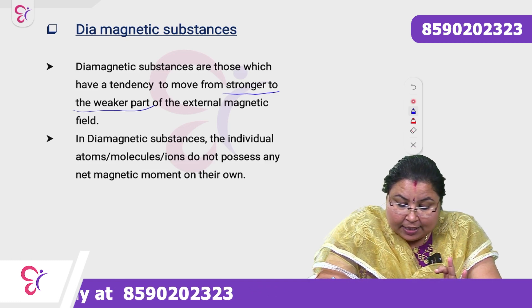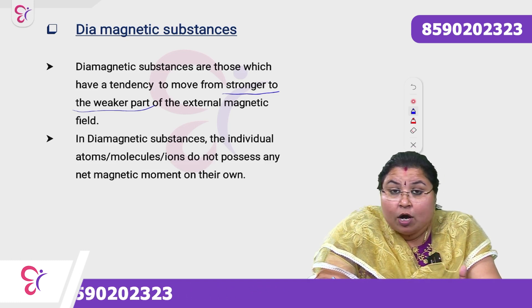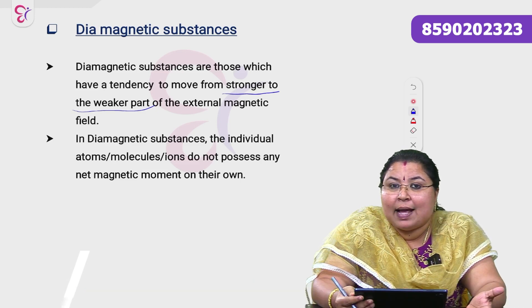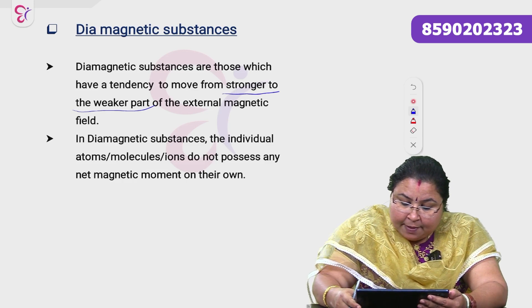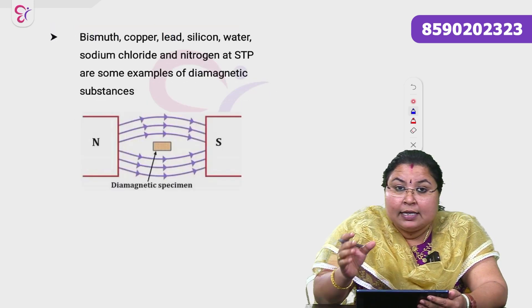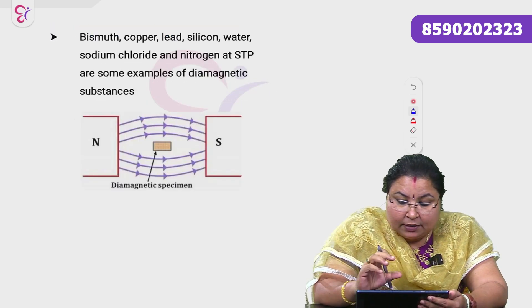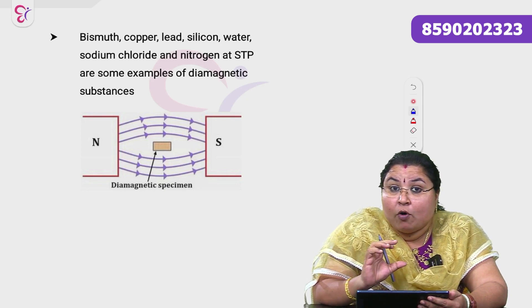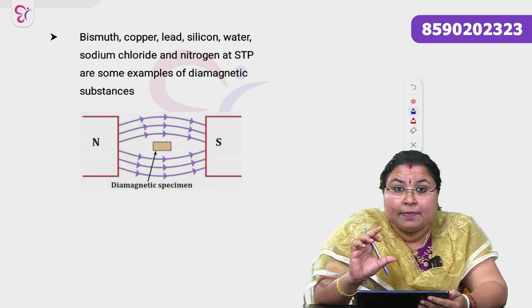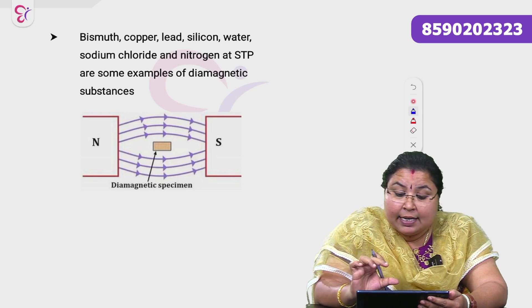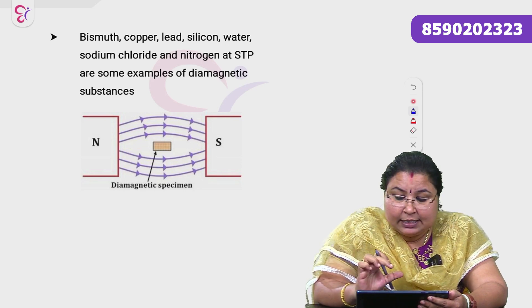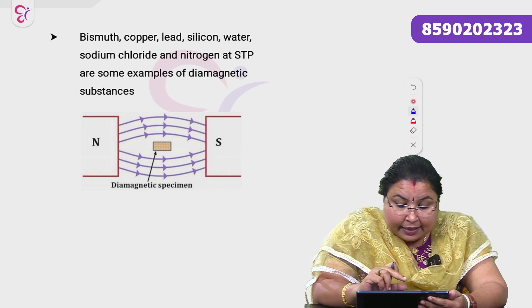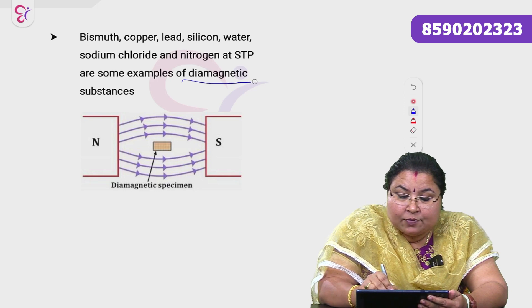Diamagnetic substances do not possess any net magnetic moment. Examples include: Bismuth, Copper, Lead, Silicon, Water, Sodium Chloride, and Nitrogen at STP. Water is an example of a diamagnetic material.